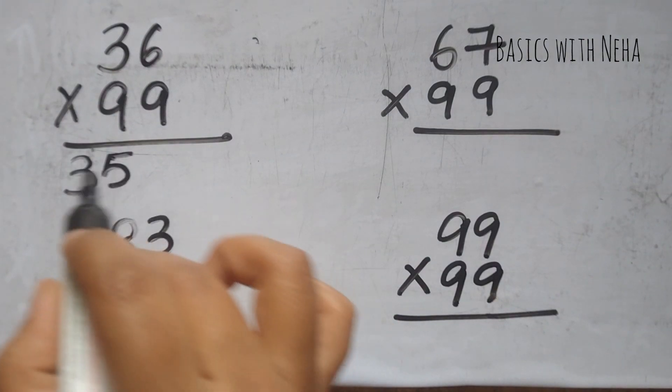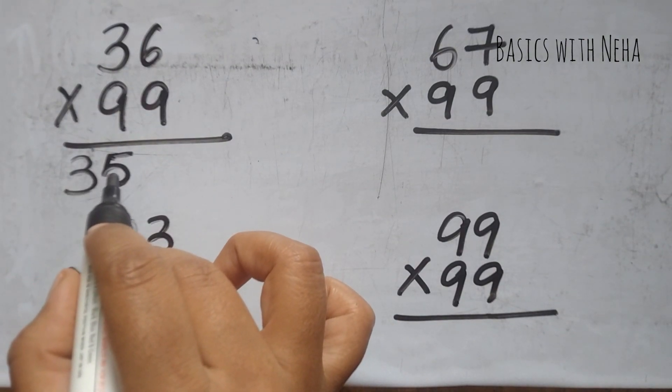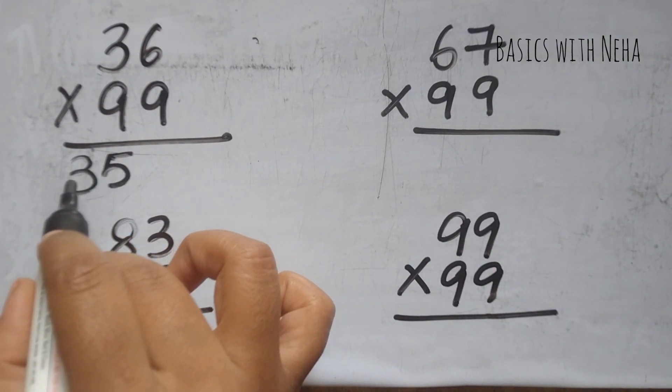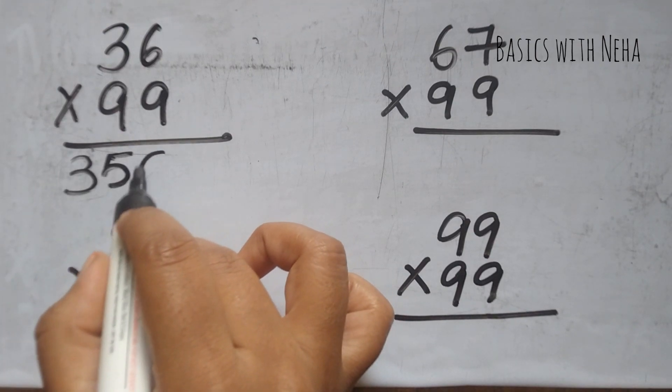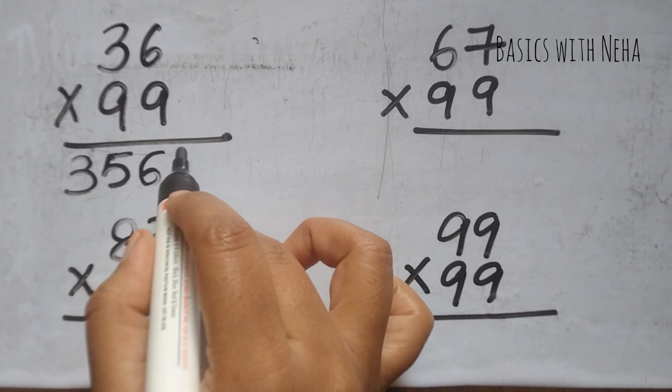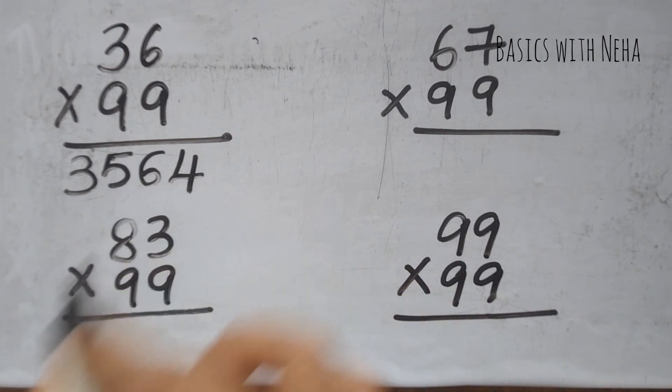And now we have to subtract this number, these both numbers from 9 individually. So 9 minus 3 will give me 6 and 9 minus 5 will give me 4. And this will be my answer when I multiply 36 into 99.